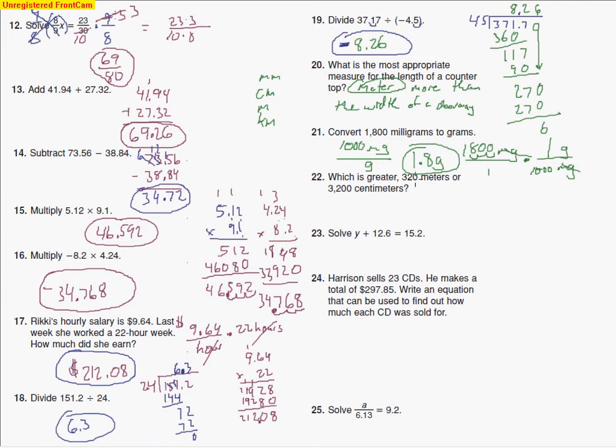Which is greater, 320 meters or 3,200 centimeters? So what we need to do is convert these. And what I'll go ahead and do is I'm going to try changing these centimeters to meters. So 3,200 centimeters over one multiplied by, now I'm just going to cancel out centimeters.